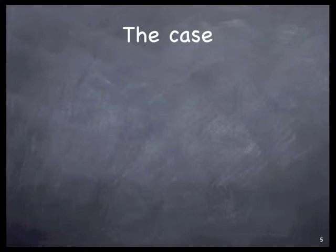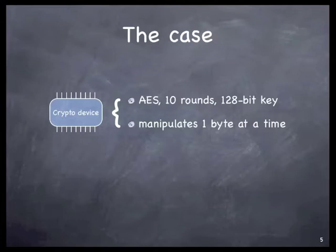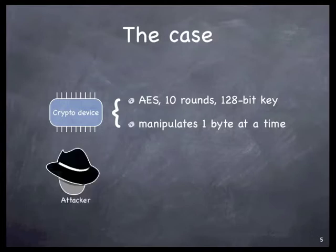First of all, I would like to present the example that I'm going to use during this presentation. On one hand, we have the crypto device that we are trying to attack. Let's say that this crypto device implements a block cipher like AES, for example. And let's imagine that this device manipulates only one byte at a time. This might be easily generalized to more bits and more bytes.